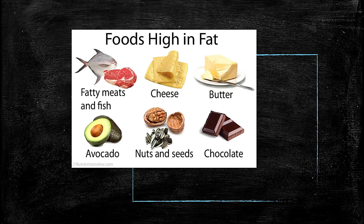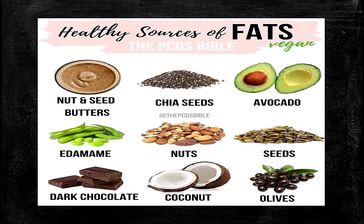Foods that are high in fat include fatty meats and fish, cheese, butter, avocado, nuts and seeds, and chocolates. Shiny substances like butter and well-tempered chocolate indicate high fat content. Chocolates that were not properly tempered may have white substances on the surface — those are fats. Healthy sources of fat are typically plant-based or fish-based: nuts and seeds, avocado, coconut, and olives. Meat-based fat sources are typically unhealthy. And that's it for our module which talks about lipids — thank you.